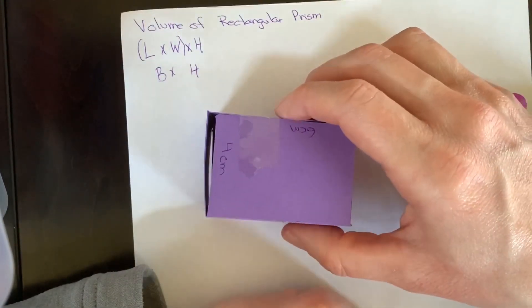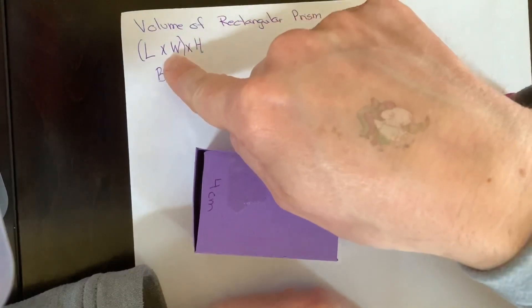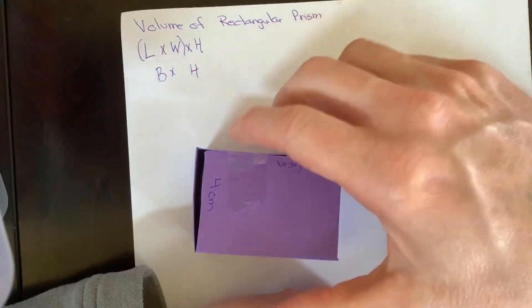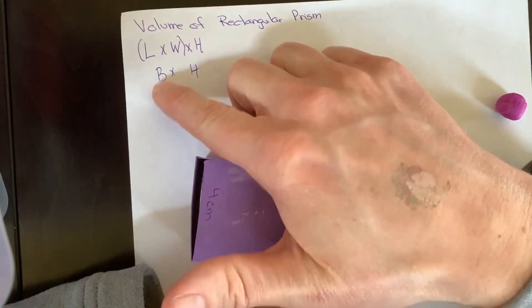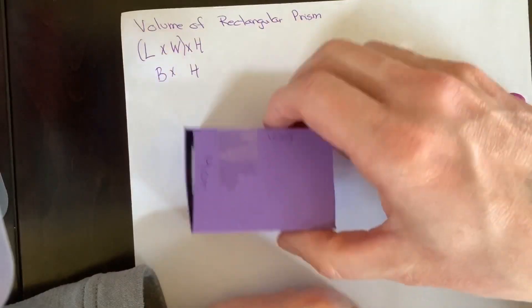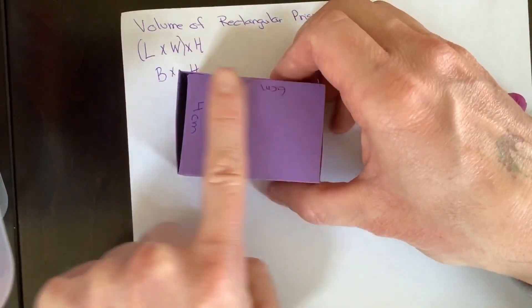To calculate a rectangular prism, we do length times width times height. Sometimes they'll also say the base. So the base is just length times width. So if I had this, it's just the base.